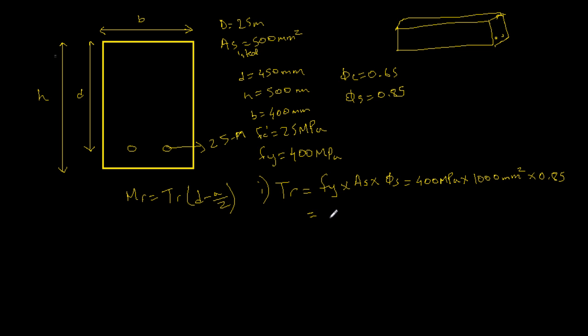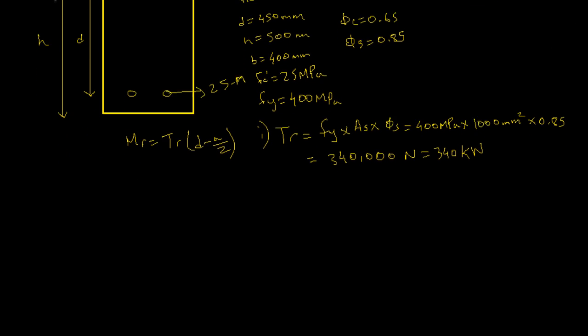And we have tension equal to 340,000 Newtons. MPa times millimeter squared will always give you Newtons, but we want it in kilonewtons, so 340 kilonewtons. So we found Tr, now we have to find a.